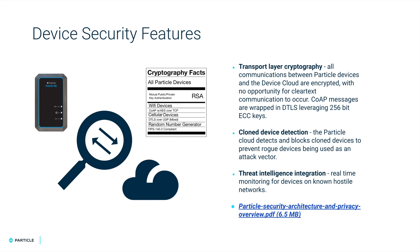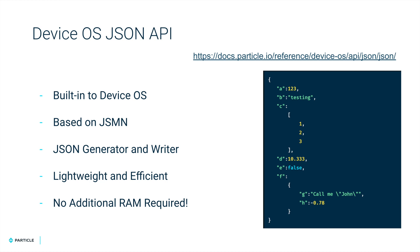Additionally, we have a JSON library built into DeviceOS. This allows for placing multiple pieces of data in a single publish, subscribe, or function call, and it includes a JSON generator and writer. Use this to minimize data operations and ensure better performance and efficiency.